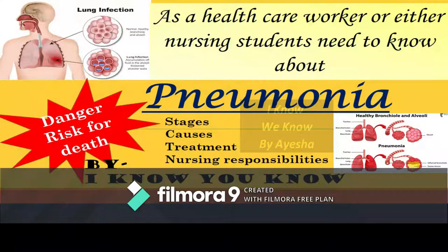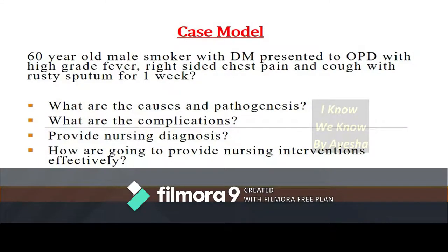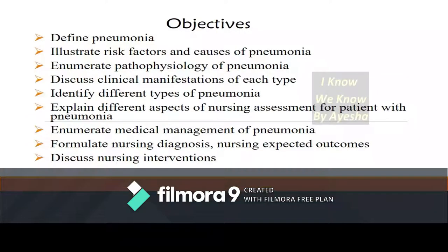When we receive a patient of 60 years old, smoker, diabetes mellitus, presented in OPD with high grade fever, right side chest pain, cough, and rescue sputum for the last one week, for this type of condition we need to know the causes of sputum secretions, cough, chest pain, pathogenesis, and complications so that it will be helpful for us to continue treatment and nursing responsibilities effectively.